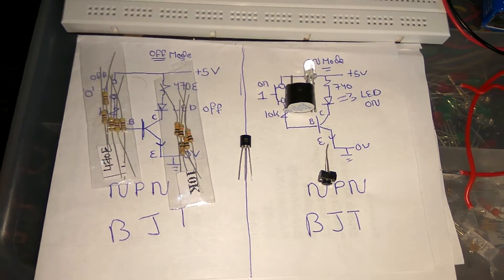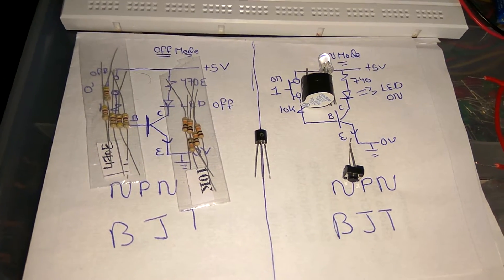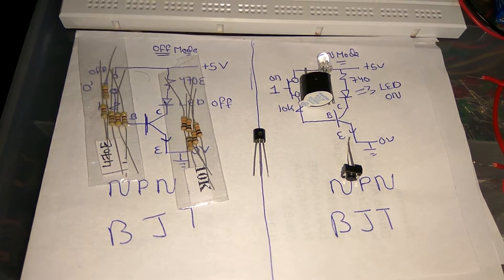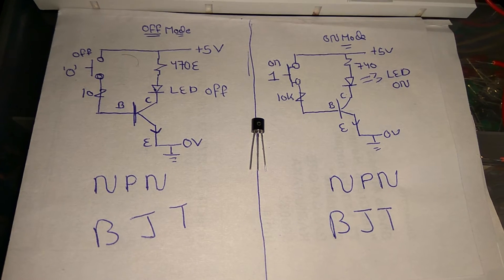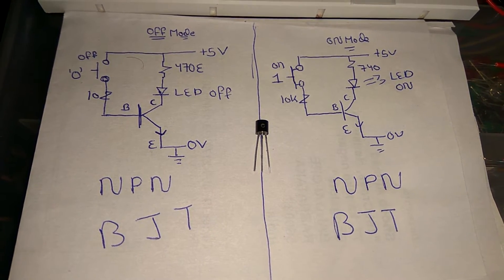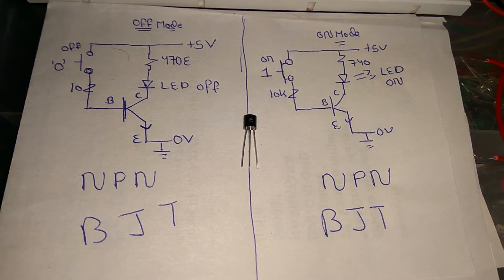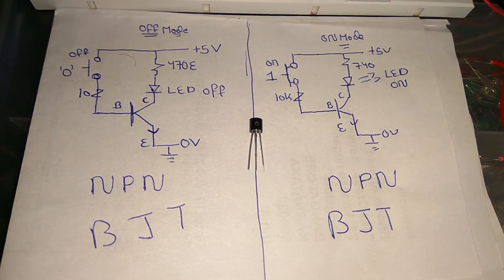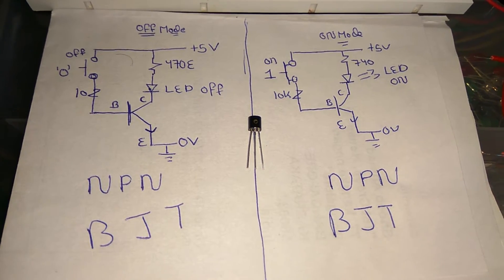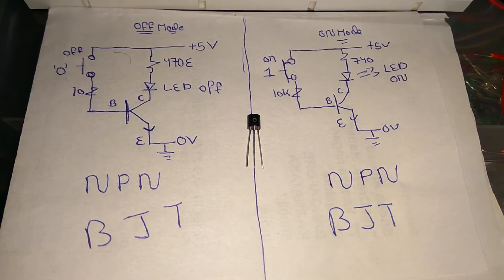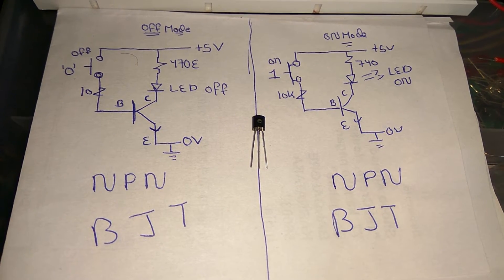I used the BC547 transistor. It is NPN in nature — an NPN bipolar junction transistor. Before the practical demonstration, let's get a rough idea of how a transistor works. Transistors are normally used for two purposes: amplification, and most commonly, switching. In today's tutorial I will show how a transistor works as a switch. As I told you in my first tutorial, transistors have three legs: base, emitter, and collector.